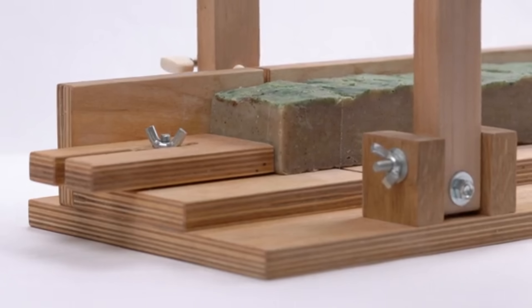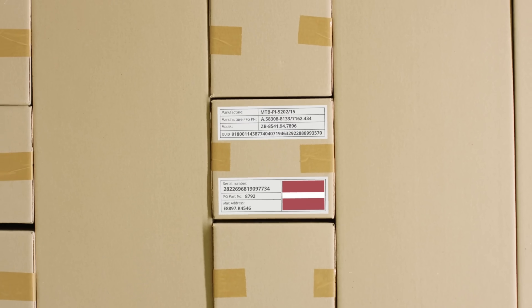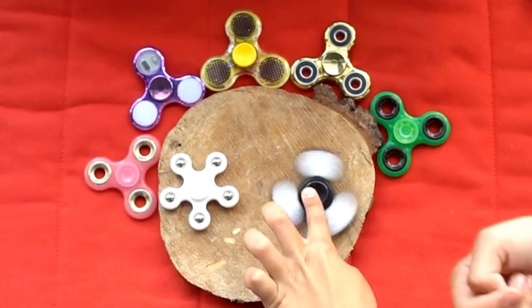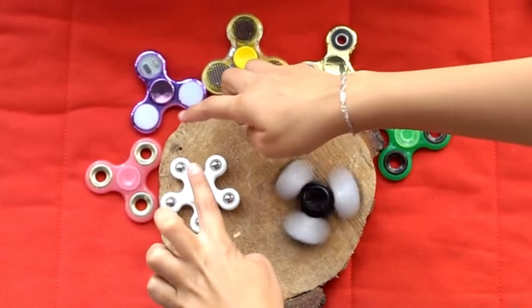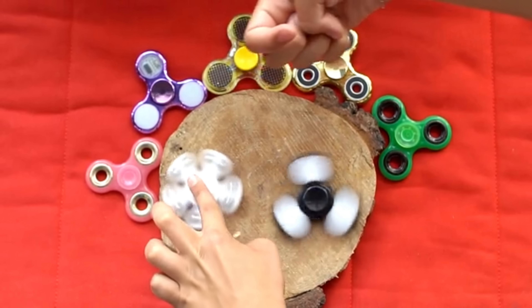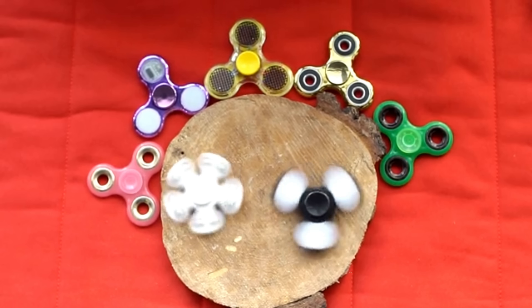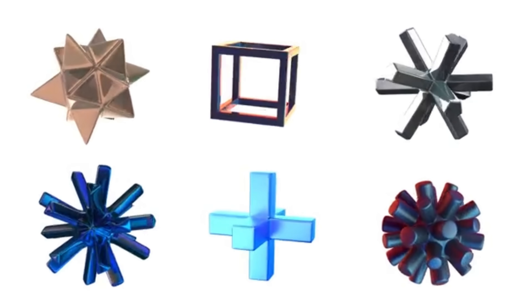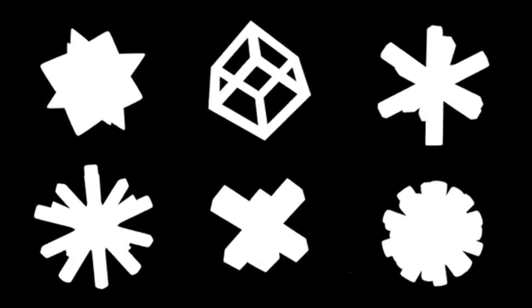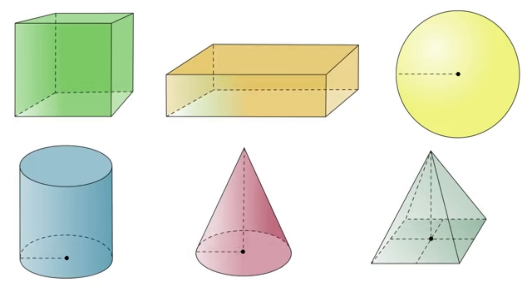Finally, let's consider their material. The wooden block is made of wood, the glass sheet is made of glass, the metal spoon is made of metal, and the cotton cloth is made of cotton. So based on their material, we can make four separate groups: one for wooden objects, another for glass objects, a third for metal objects, and a fourth for cotton objects. As you can see, there are many different ways to group objects based on their properties. Sometimes we can group objects based on one property, while other times we can group them based on multiple properties.